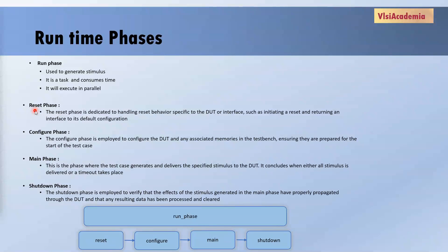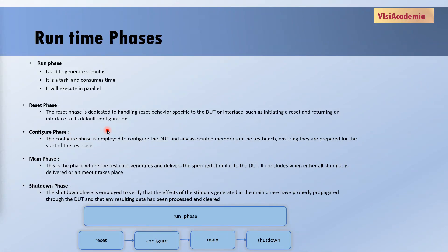First we have reset phase. Along with reset phase, we have one pre-reset and post-reset phase also. Pre-reset phase executes before reset, and post-reset executes after reset. The major purpose of pre-reset phase is it takes care of any activity that should be done before reset is executed, like checking for any signal to go active before reset happens. The reset phase is basically used for resetting the DUT or our interface — for example, this phase can be used to generate a reset signal and whenever the signal goes high, it will put our DUT or interface into its default state. After the reset phase, we have a post-reset phase, which is used for any activity that should be done immediately after the reset.